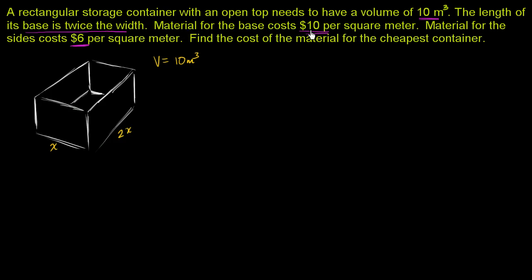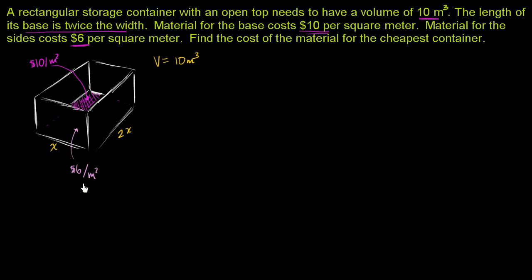The material for the base costs $10 per square meter, so this base area costs $10 per square meter. And the material for the sides costs $6 per square meter. Let's see if we can come up with how much this box would cost to make as a function of x.